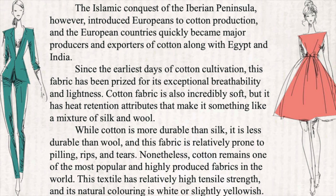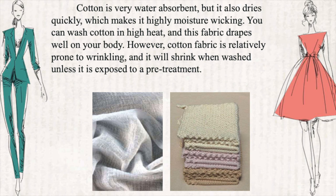Nonetheless, cotton remains one of the most popular and highly produced fabrics in the world. This textile has relatively high tensile strength and its natural coloring is white or slightly yellowish. Cotton is very water absorbent but it also dries quickly, which makes it highly moisture wicking. You can wash cotton in high heat and this fabric drapes well on your body. However, cotton fabric is relatively prone to wrinkling and it will shrink when washed unless it is exposed to a pre-treatment.